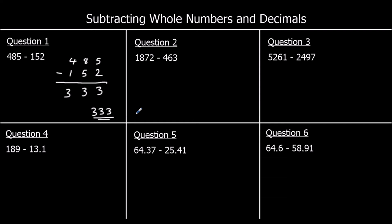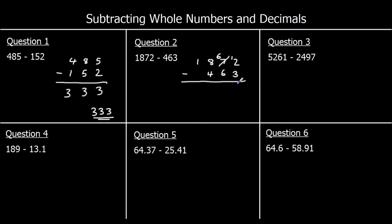Question 2: 1,872 take away 463. We start with the smallest column again. The ones: 2 take away 3, I don't want to do, so I'm going to steal one of the tens, and that's going to be worth 10 in the ones column. So 12 take away 3 is 9. The tens is now 6 take away 6, which is 0. The hundreds: 8 take away 4 is 4. And the thousands: 1 take away nothing is 1. So I've got 1,409.